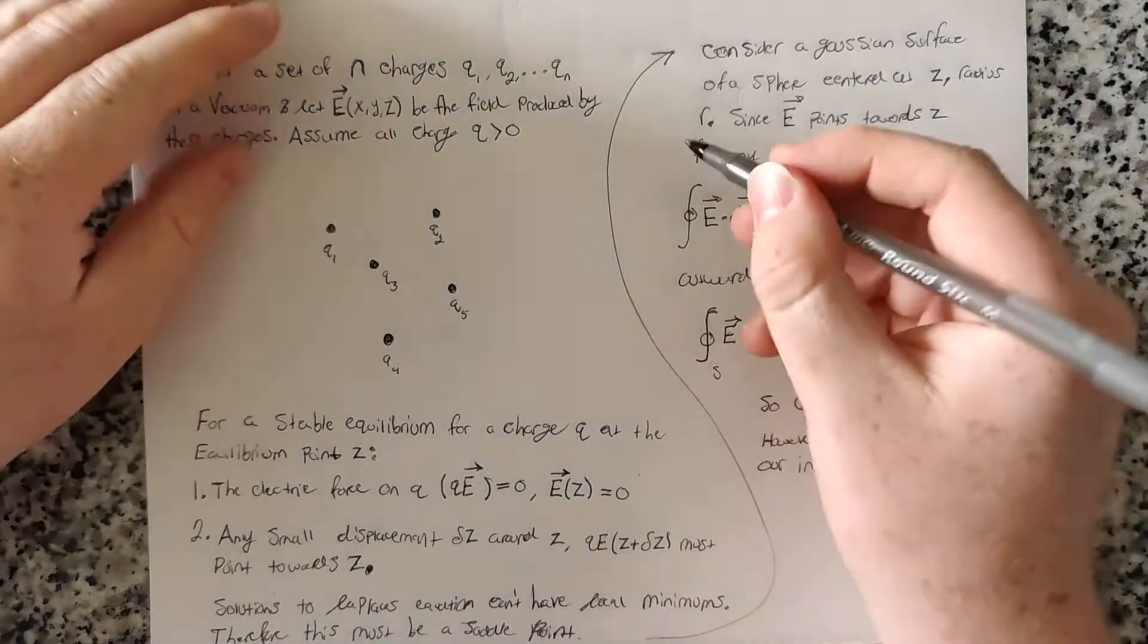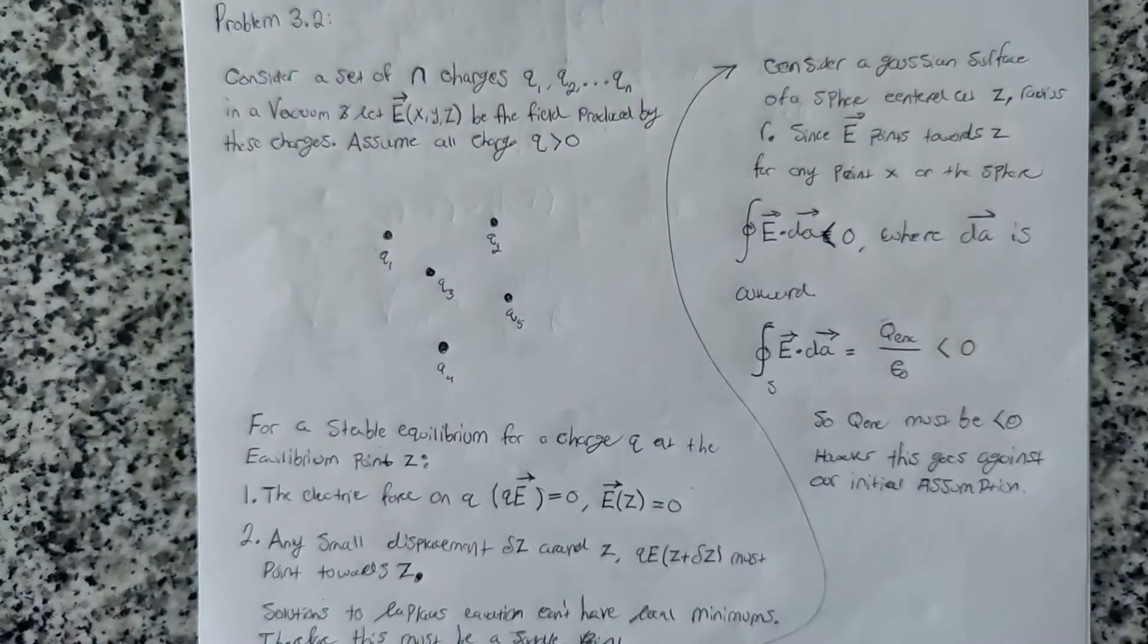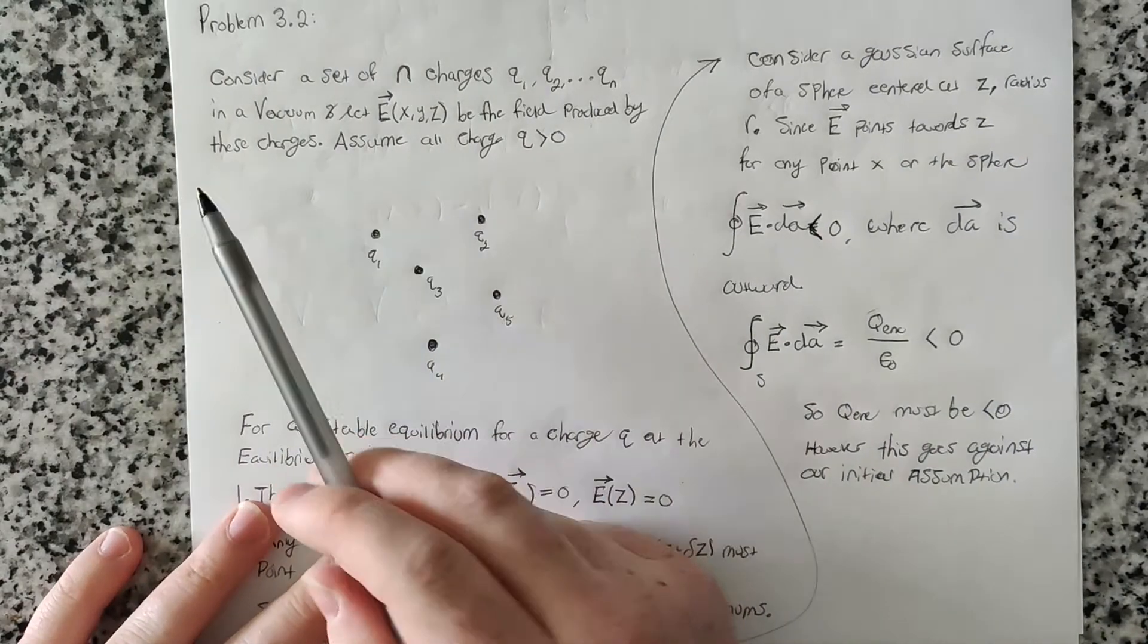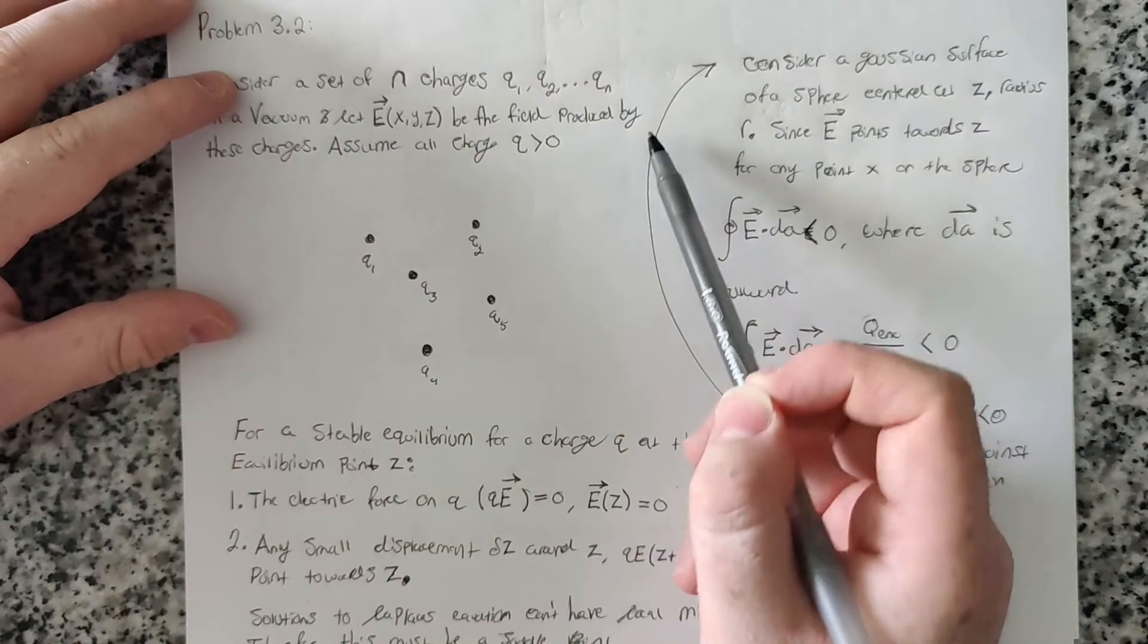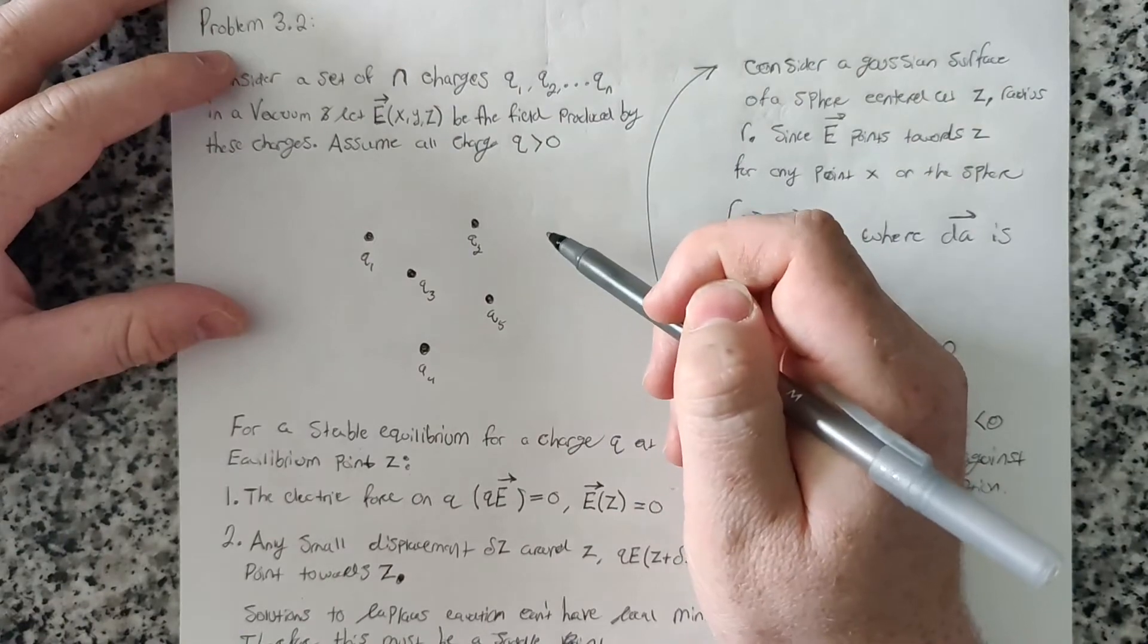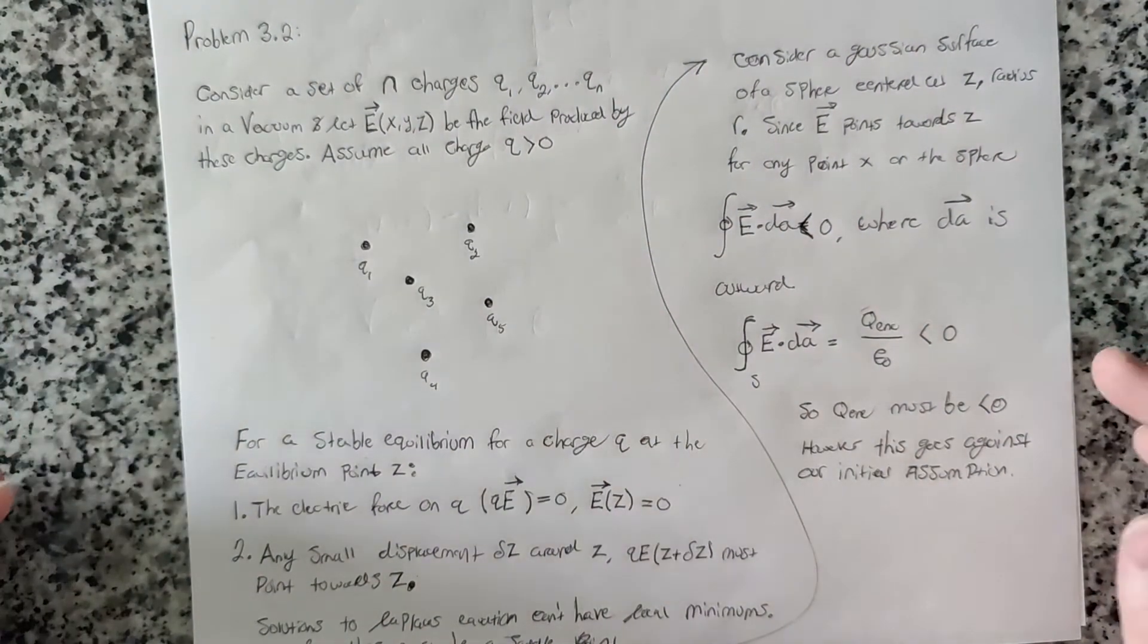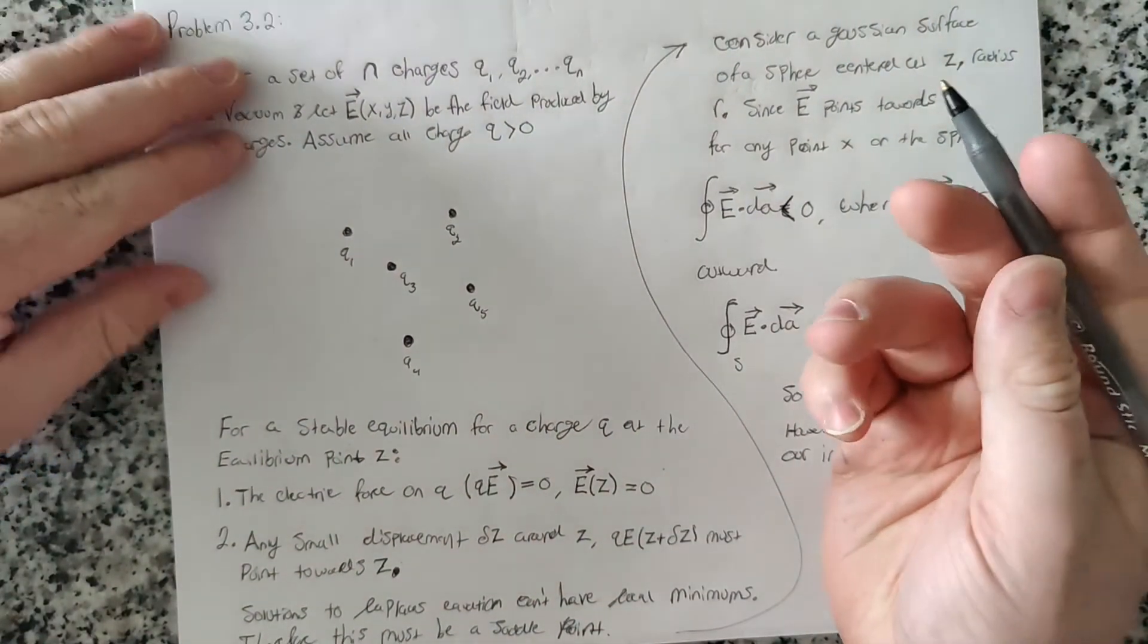For example, consider that we have a set of N charges, Q1 all the way to QN, and they exist in a vacuum. Let E be the field produced by these charges. Let's just assume for this case that the charges are all greater than zero, but this works for charges less than zero too.